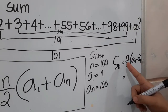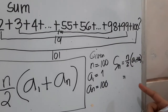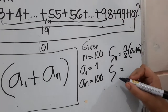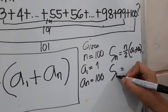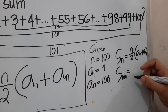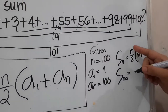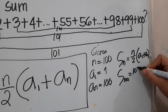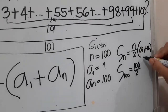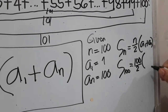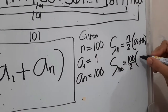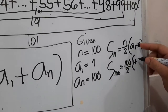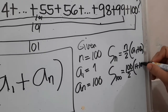We substitute all our givens. The sum of 100 terms equals n over 2, where n becomes 100 divided by 2, multiplied by the first term 1 plus the last term 100.